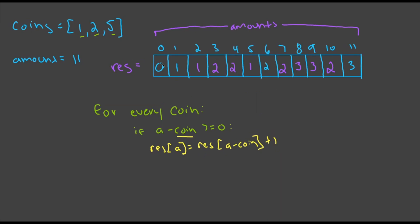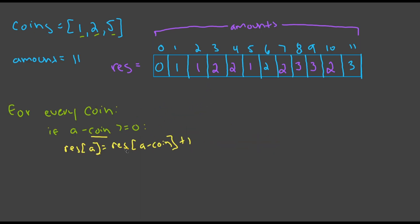While this solution works for one, we want to generalize it because we're not guaranteed the coins are sorted. So if our one coin was last, result at 'a' might not give us the minimum. What we actually want is the minimum between result at 'a minus every coin'. So if 'a' is equal to 11, we want the min between result at 11 minus one, result at 11 minus two, and result at 11 minus five.